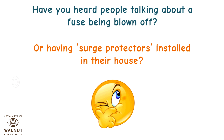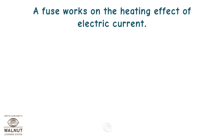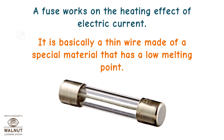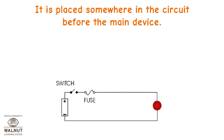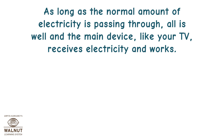A fuse is a small device that we all have in our houses to protect our devices from being blown out in case there is a sudden increase in the amount of electricity coming in. A fuse works on the heating effect of electric current. It is basically a thin wire made of a special material that has a low melting point. It is placed somewhere in the circuit before the main device, so all the electricity that goes to the main device travels through the fuse wire first. As long as the normal amount of electricity is passing through, all is well and the main device like your TV receives electricity and works.